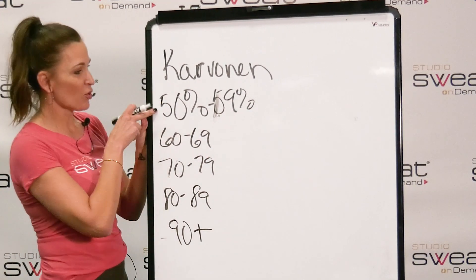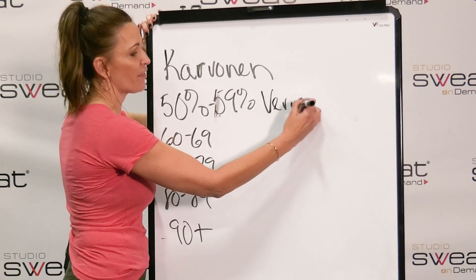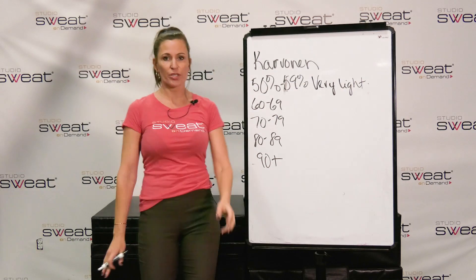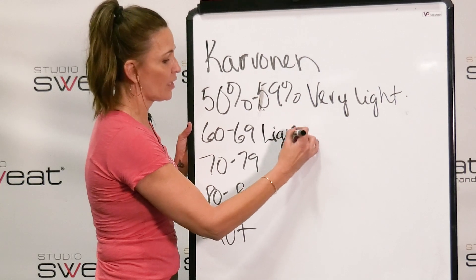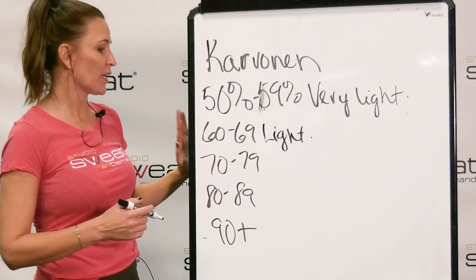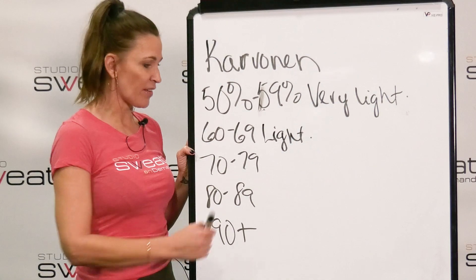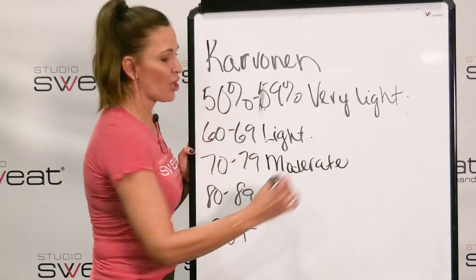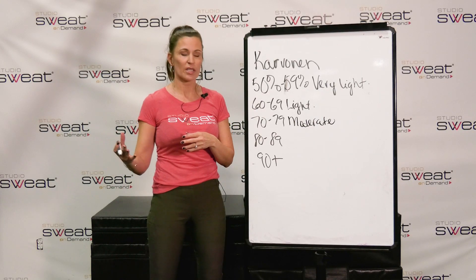Zone one is 50 to 59% — that means you're doing very light activity, like a nice casual stroll. Zone two is 60 to 69%, which might be a brisk walk with some rolling hills. Zone three is 70 to 79%, which is moderate activity — maybe a jog or just coming out of warm-up on your spin bike.